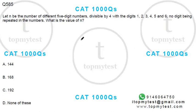Hi, this is a simple question on permutations and combinations. Let's see what this says. Let n be the number of different five-digit numbers divisible by 4 using the digits 1, 2, 3, 4, 5, 6, no digit being repeated. What is the value of n?